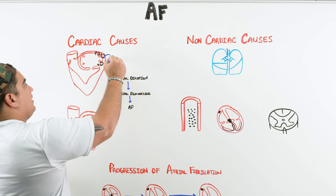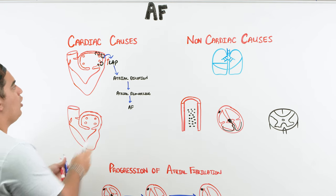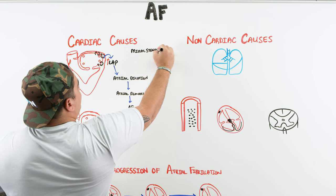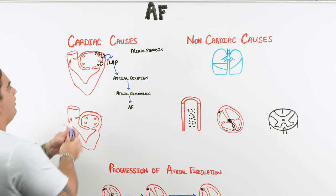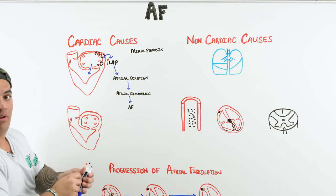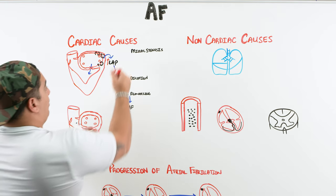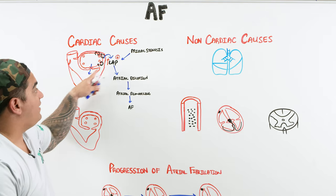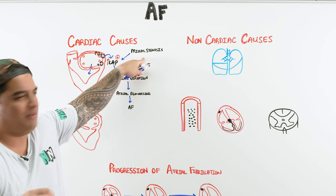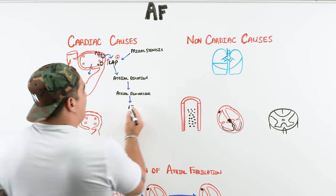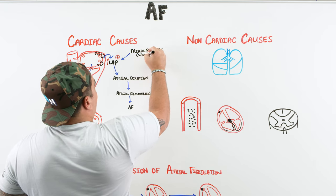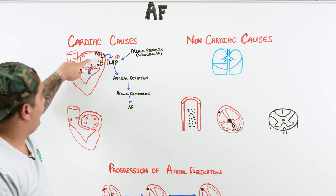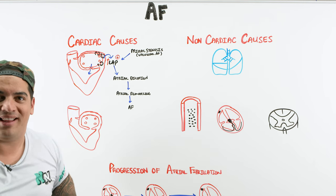What causes left atrial pressure to be high? One cause is mitral stenosis — a disease of the mitral valve where blood can't get from the left atrium into the left ventricle. This inhibition raises left atrial pressure. An important term: when the mitral valve is diseased, particularly from rheumatic fever, the resulting AFib is specifically called valvular AFib.